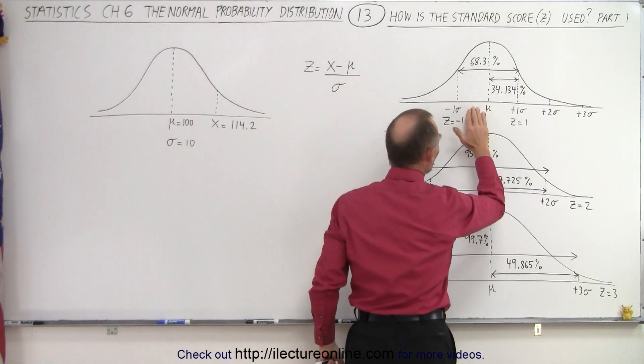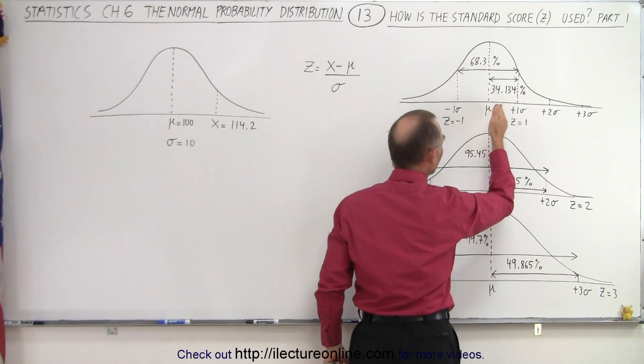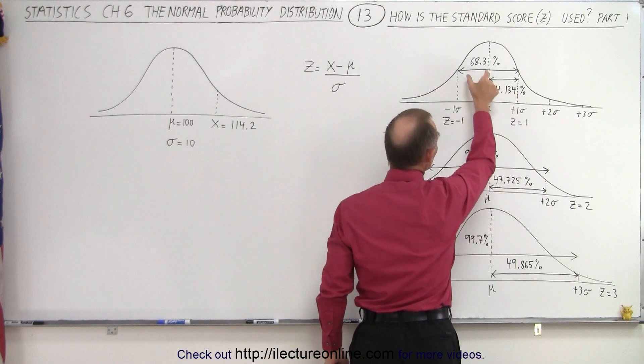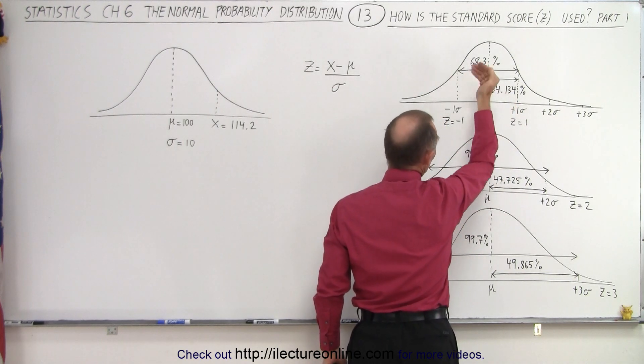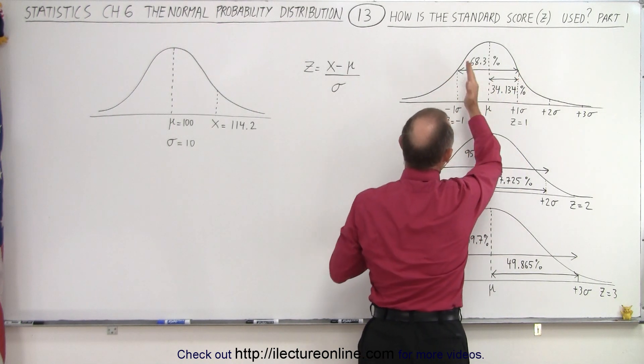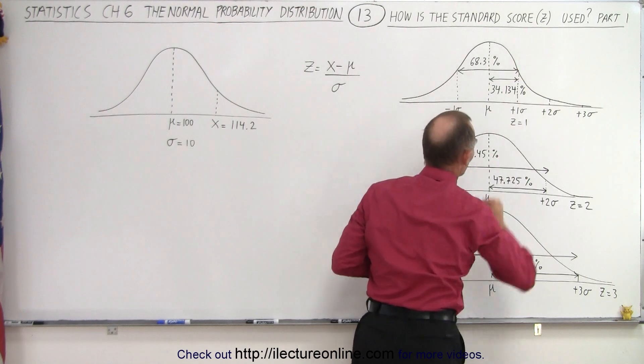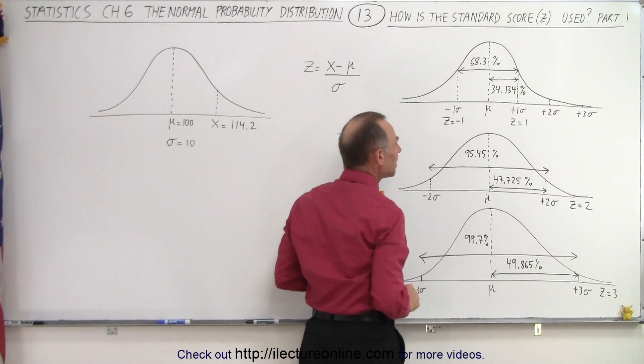If we go to both sides, we go minus one sigma to the mean, and from the mean to plus one sigma, we simply double that number, twice 34.134, is essentially 68.3% of all the values will lie between minus one sigma and plus one sigma away from the mean.